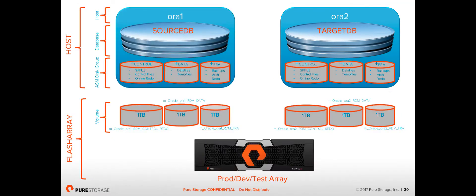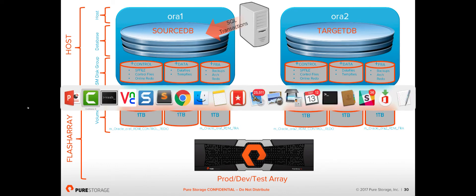We're going to take a snapshot of the source database and use it to refresh the target database — like a scenario where a developer calls their DBA and says 'I need a fresh copy of the production database.' The first step is logging on to the source database on Aura1 and running some SQL transactions to add a bit more data. This source database is about 650 gigabytes; we're going to add a few more tables and some additional data.